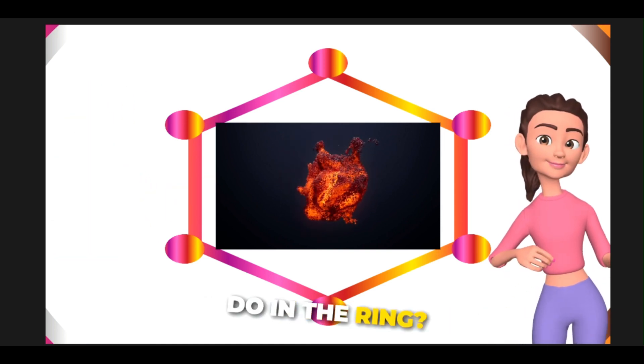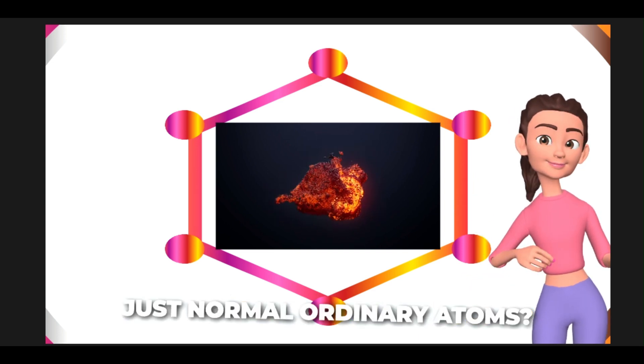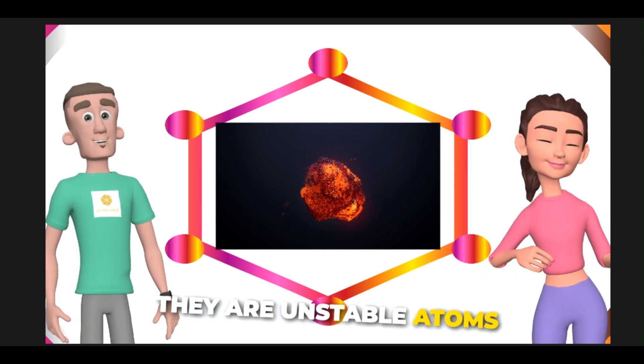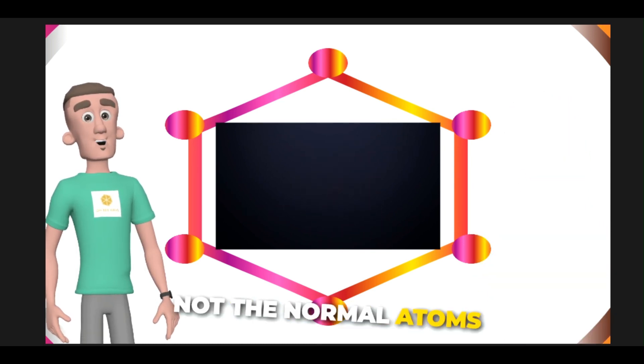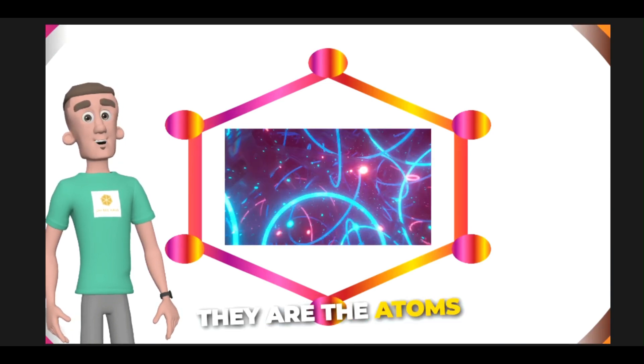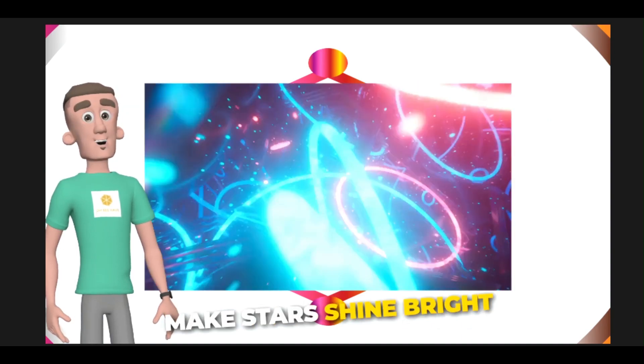What do these atoms do in the ring? Are they special or just normal, ordinary atoms? And why are they there? They are unstable atoms, not the normal atoms that we learn about in biology. They are the atoms that act like atomic clocks, the atoms that make stars shine bright.